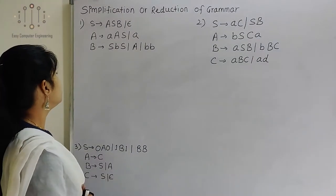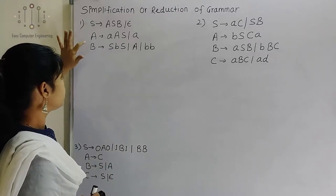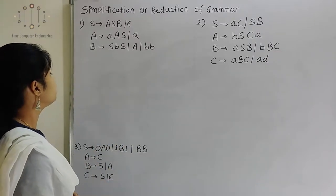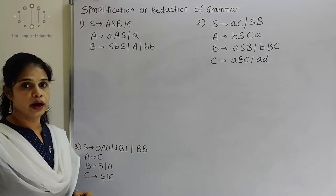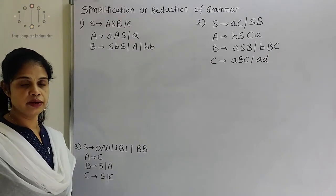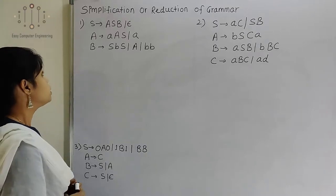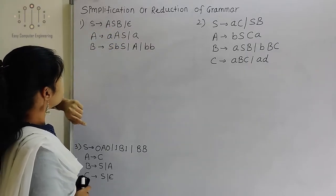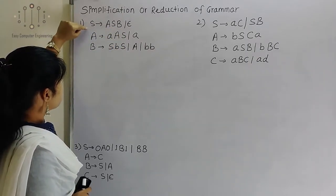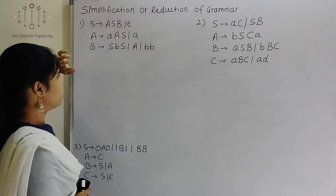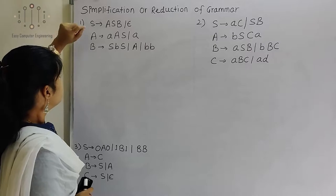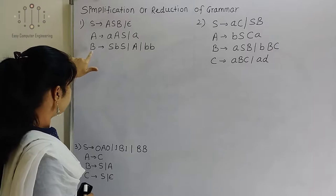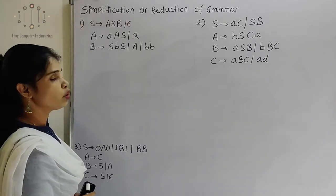First example has three variables and some terminals, and there is also an epsilon production. First we will find whether there are any non-reachable or non-generating variables present or not. From S, we can reach S itself, A, and B — so A and B are reachable symbols. From A, we are getting A, S, and A. So here there is no non-reachable symbol.